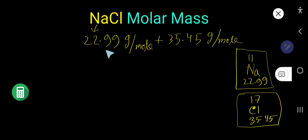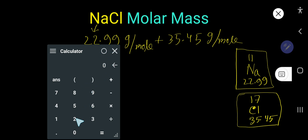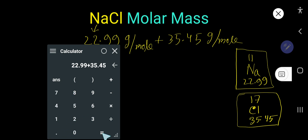If you add these two amounts, you will get the molar mass of sodium chloride. This example will help you calculate the molar mass of any compound — just use the periodic table and express the average atomic mass in grams per mole. Let's use our calculator: 22.99 plus 35.45.